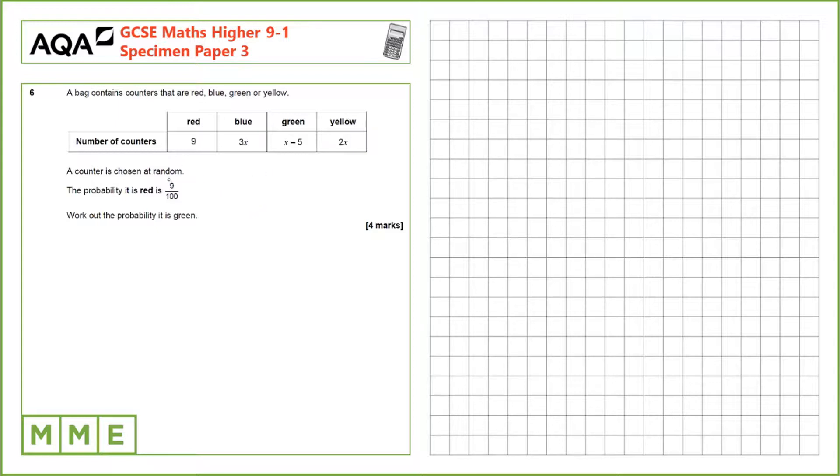The first thing we notice here is the probability that it is red is 9 over 100 and there are 9 counters. The first thing that means is there are 100 counters in the bag in total.